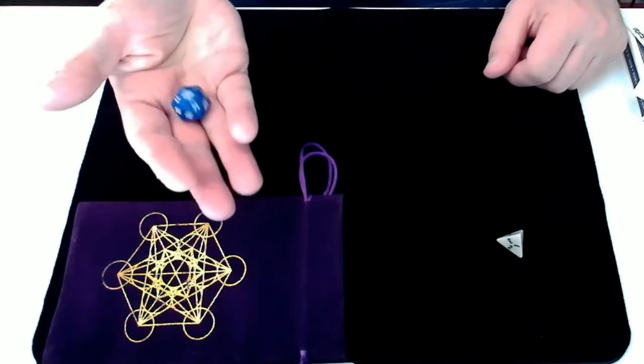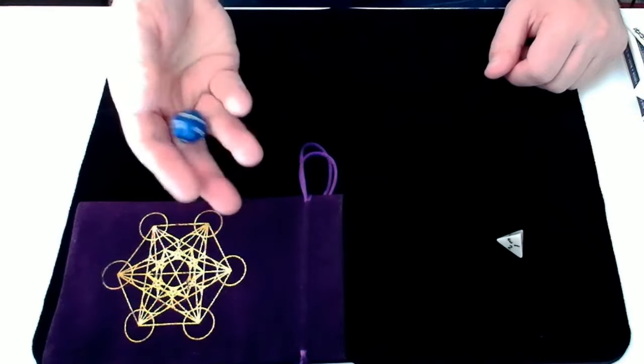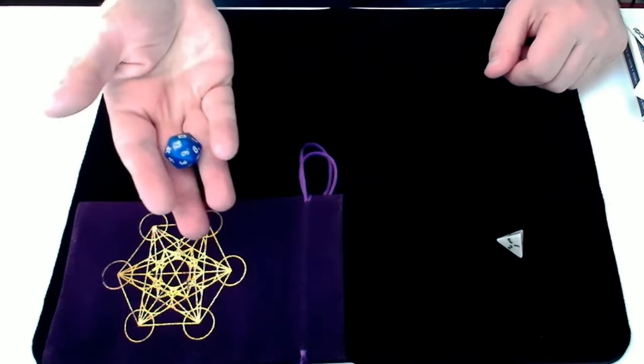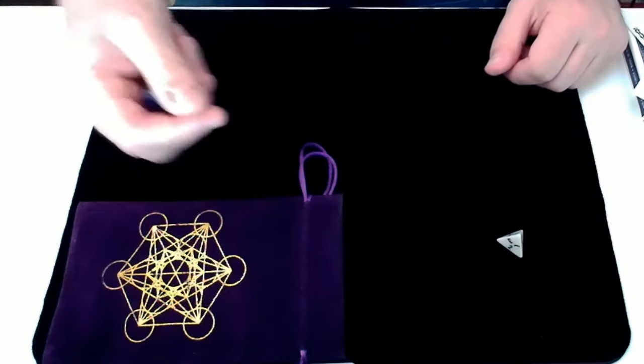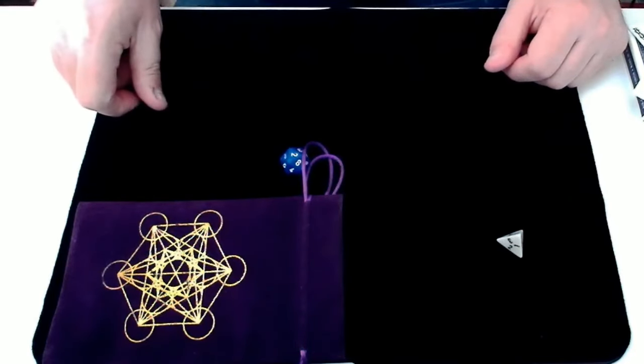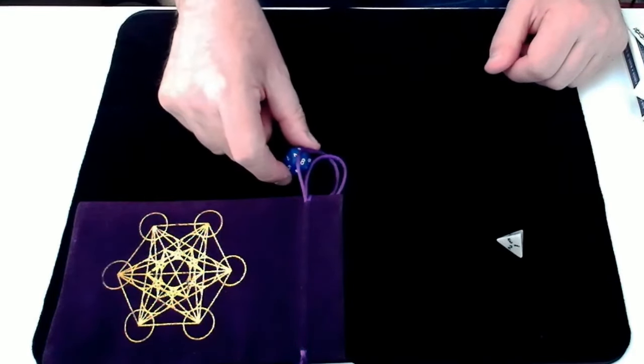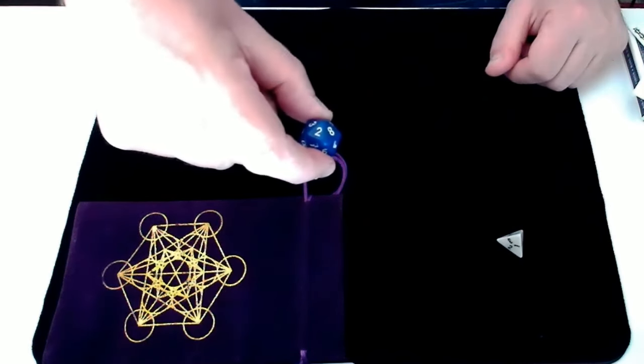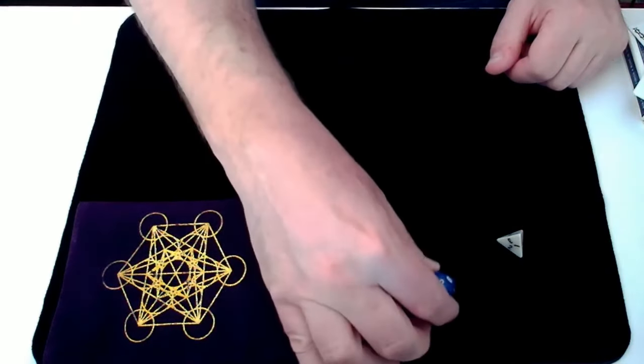1 will be Ace, 11 is Jack, 12 is Queen and 13 is King. And if we roll any number over 13 we'll just roll the dice again. We have rolled a 2. Hopefully you can see that. So our card value is 2.